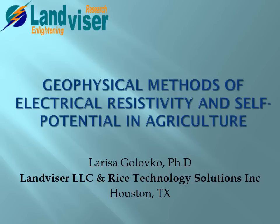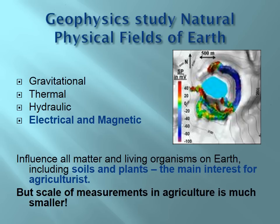Today I'm going to present an overview of geophysical methods — electrical resistivity and self-potential — and their usage in agricultural mapping and monitoring. Geophysics studies natural physical fields which exist on earth: gravitational fields, thermal fields, hydraulic fields, and electrical and electromagnetic fields. Those fields include all matter and all living organisms on earth, including soils and plants, which are the main interest for agriculture.